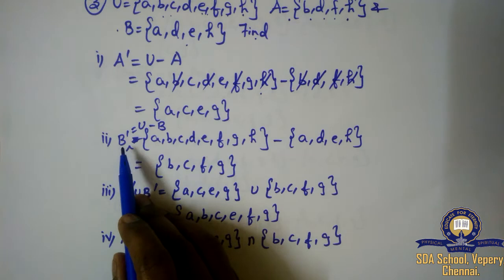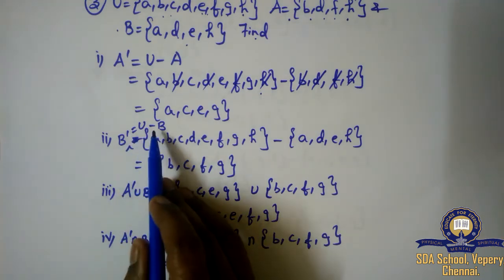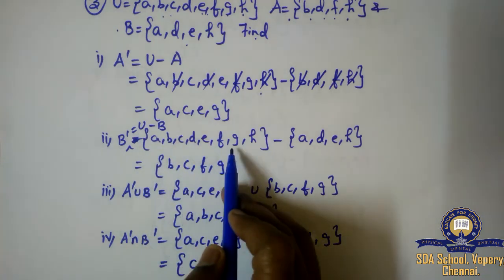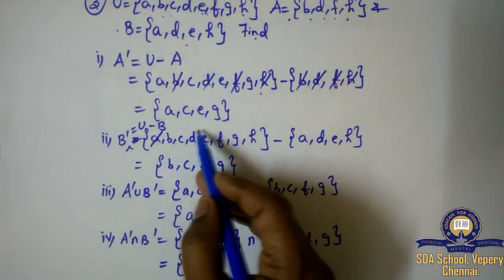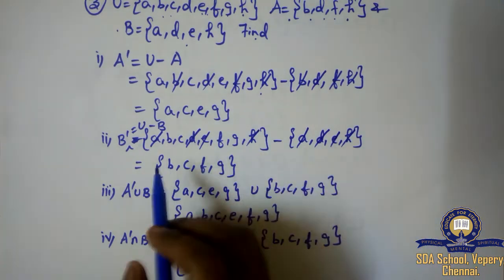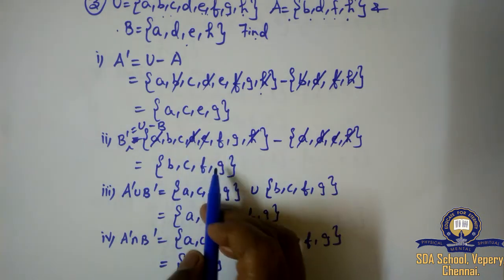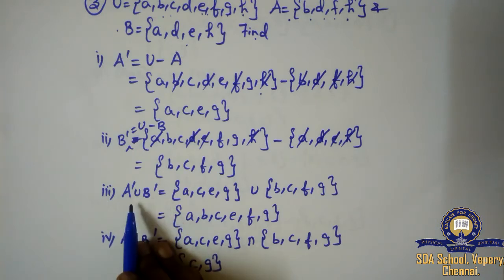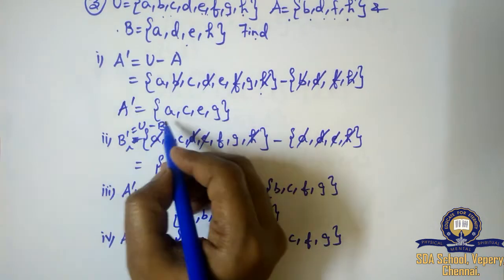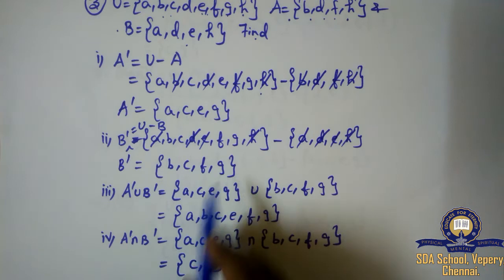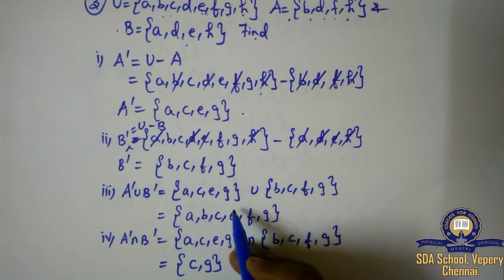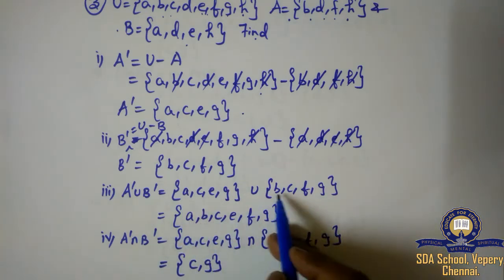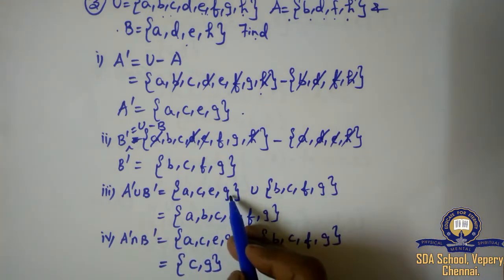Second subdivision: B dash equals U minus B. U values A, B, C, D, E, F, G, H minus B values A, D, E, H. A, D, E, H get cancelled. Pending values: B, C, F, G. Third subdivision: A dash union B dash. A dash is {A, C, E, G}, B dash is {B, C, F, G}. Union means combining: A, B, C, E, F, G.